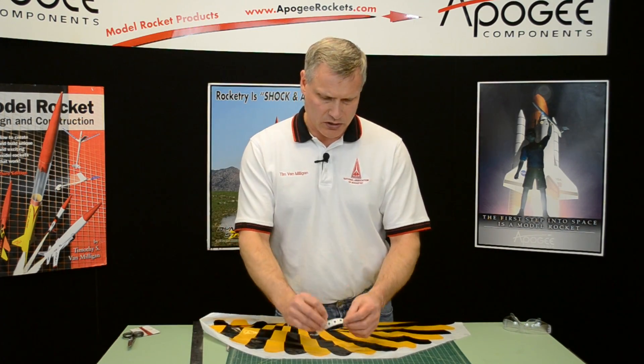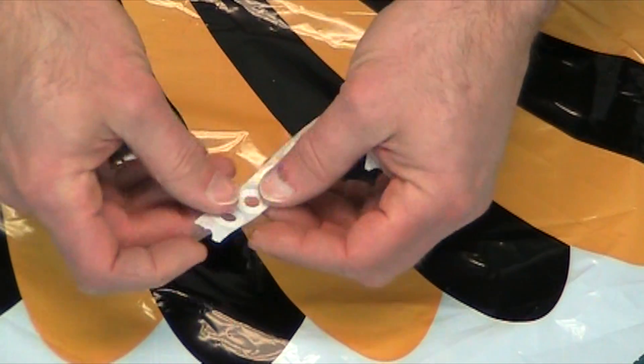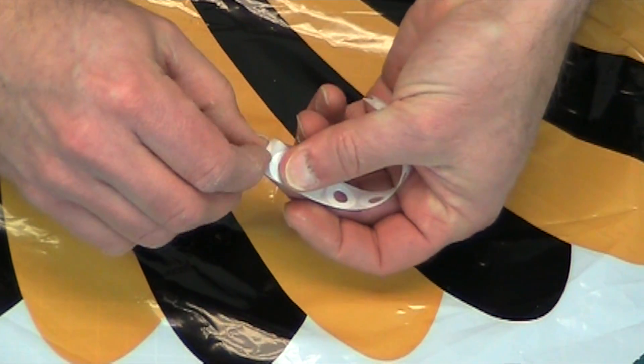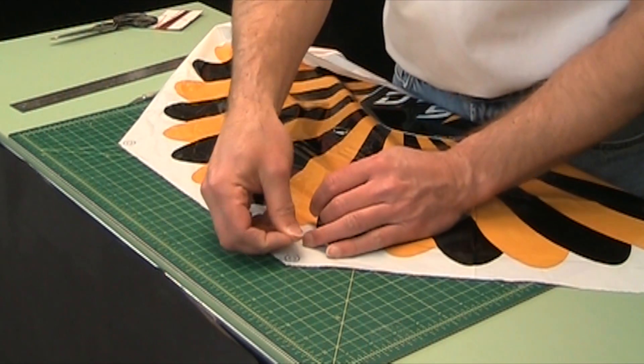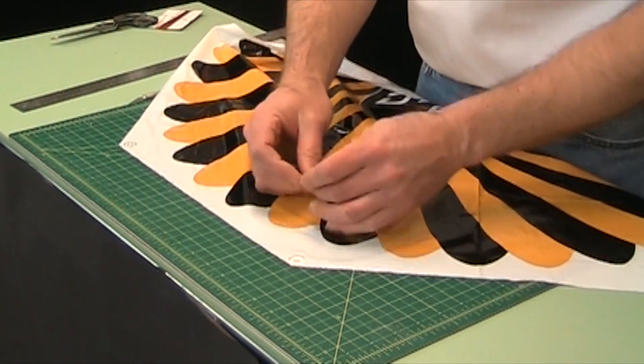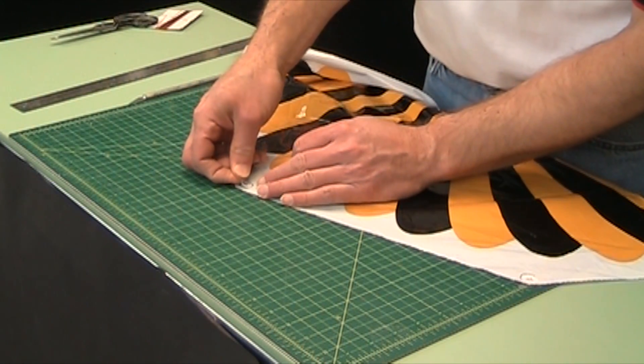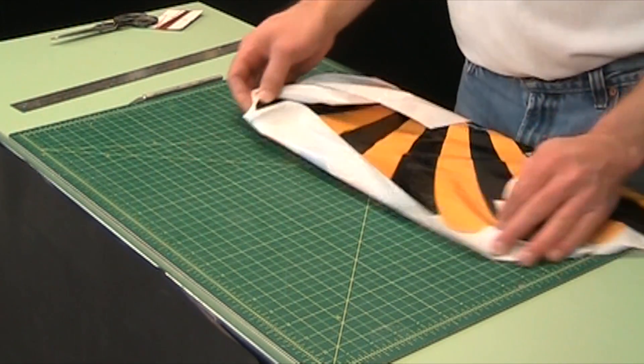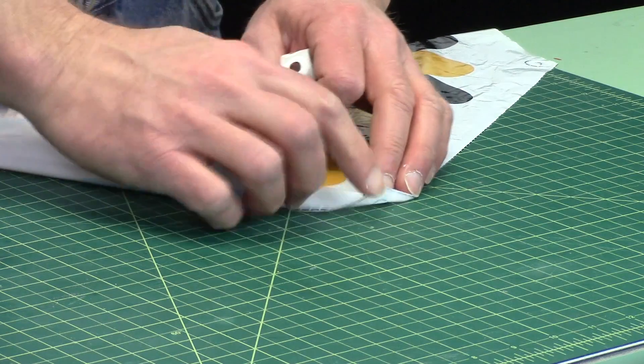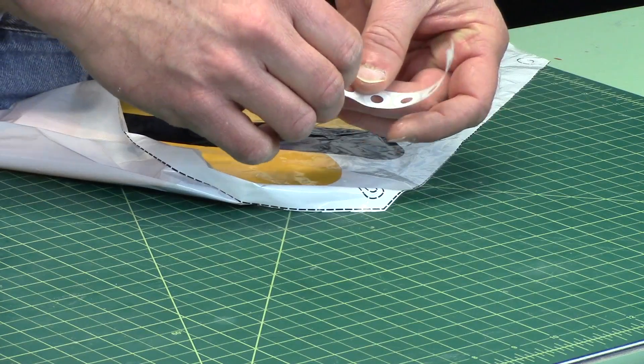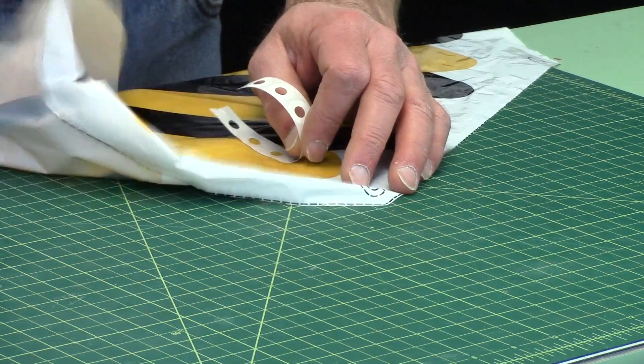I'm going to take our reinforcement holes and put those on each of the corners. I put them as close to the corners as possible, even though the parachute shows it a little bit further in. Those are for reference.